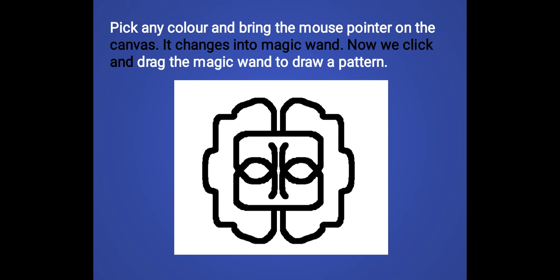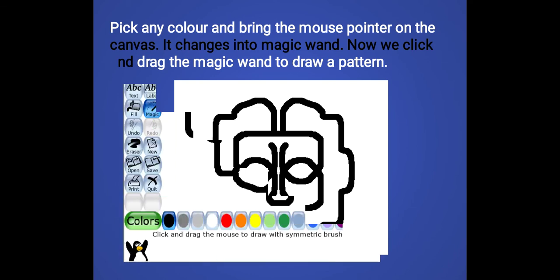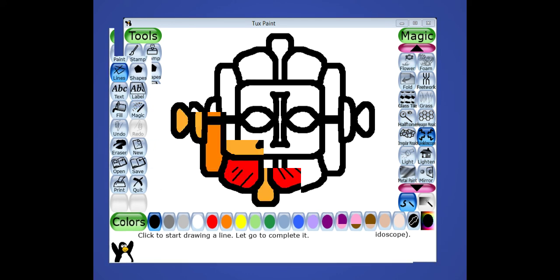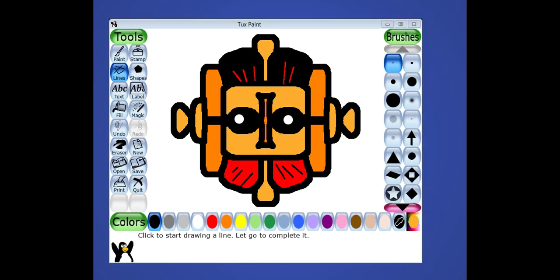As you can see children, we start from a single point and automatically the same pattern starts from all the directions. Now we have completed a pattern with the help of kaleidoscope effect. And now we will use fill tool to fill different colors in the pattern.